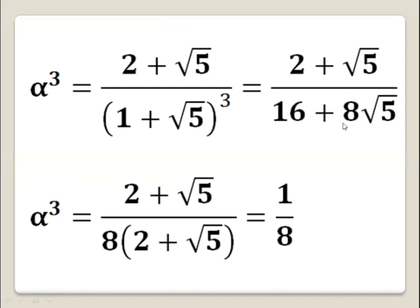Now we can take 8 as a common factor from the denominator. From 16 we get 2, and from 8 square root of 5 we get square root of 5. So alpha cubed equals (2 plus square root of 5) all over 8 times (2 plus square root of 5). We can cancel out (2 plus square root of 5) from the numerator and the denominator.